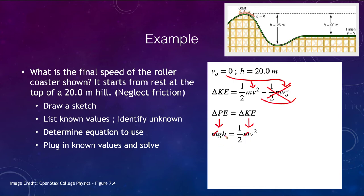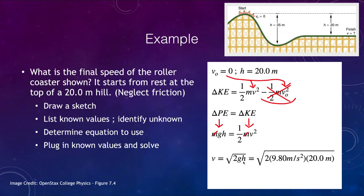Solving for v, we get v equals the square root of two times g times h. Plugging in our known numbers, the final velocity at the end of the track is 19.8 meters per second. The result is independent of mass — it doesn't matter how much mass is on the coaster, it will end up exactly the same when it reaches the finish.